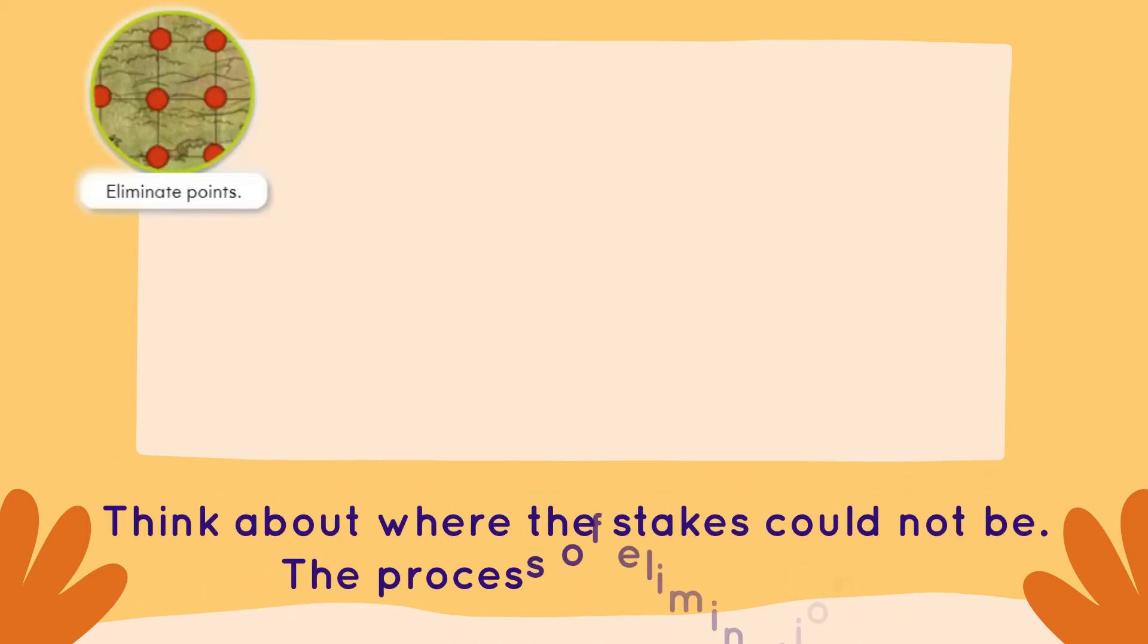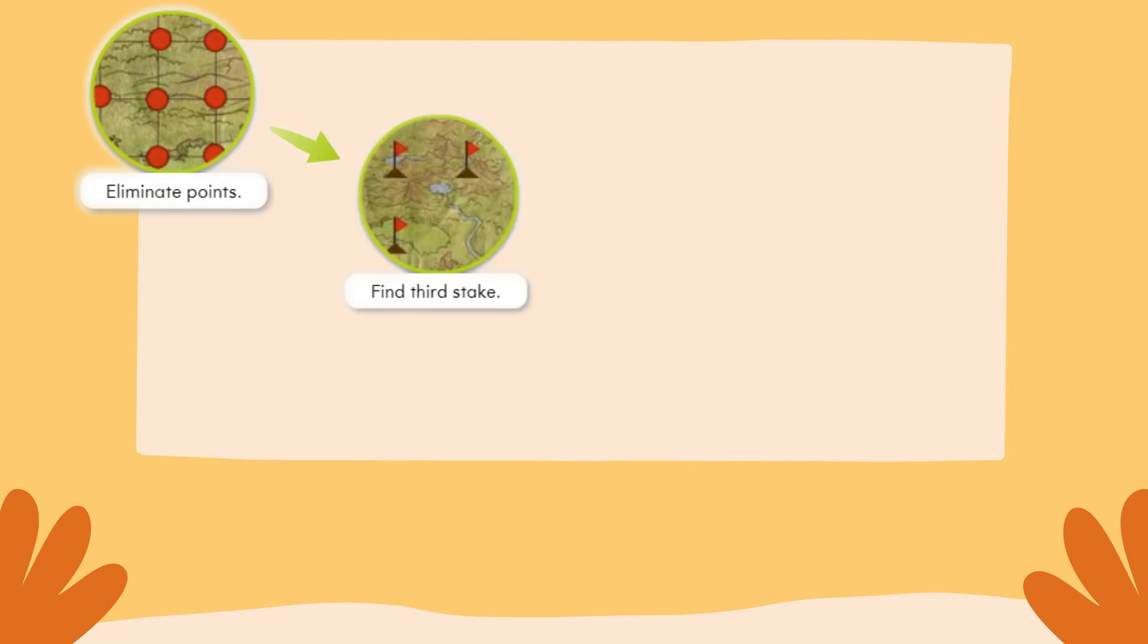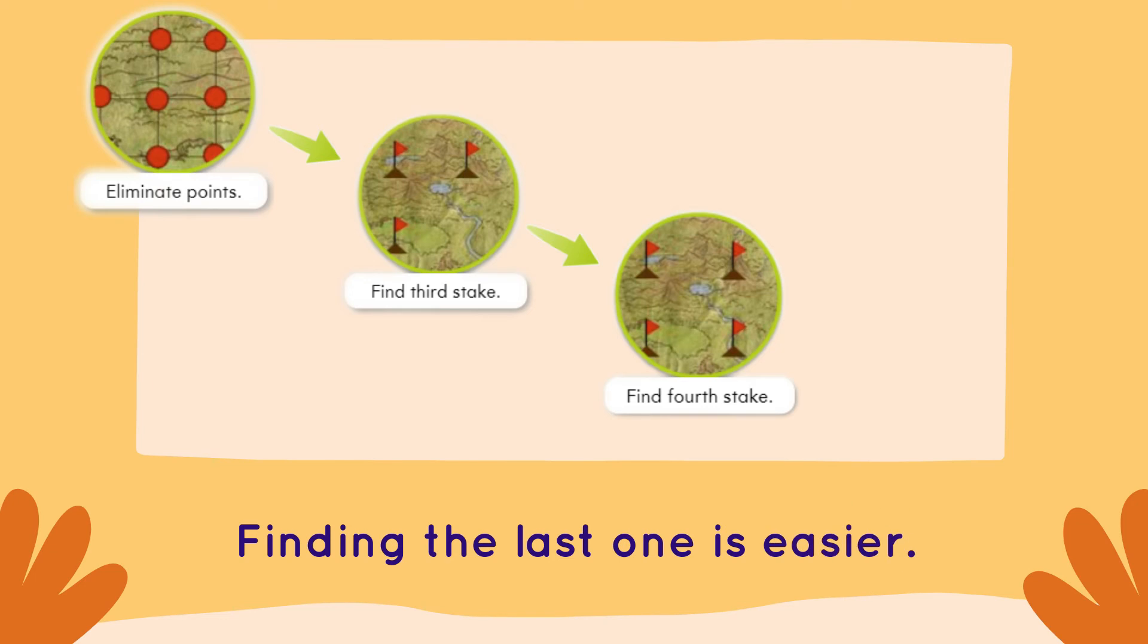First, we'll need to think about where the stakes could not be. This is called the process of elimination. Then we'll use our magnet to find the third stake. Once we have three stakes, finding the last one is easier.